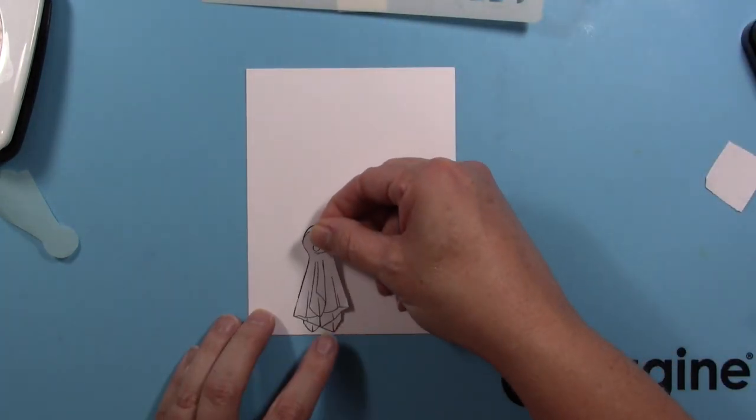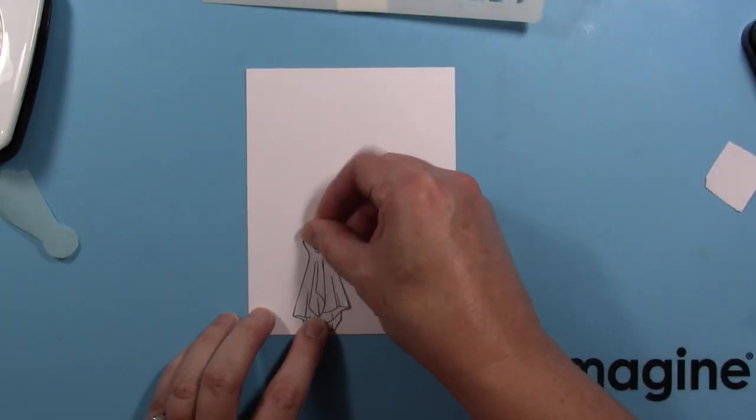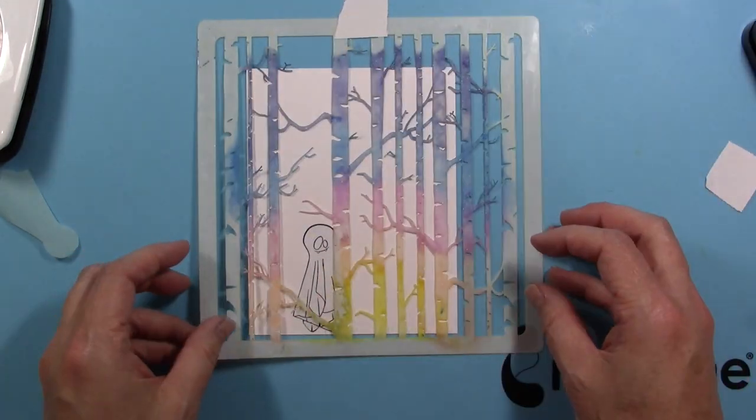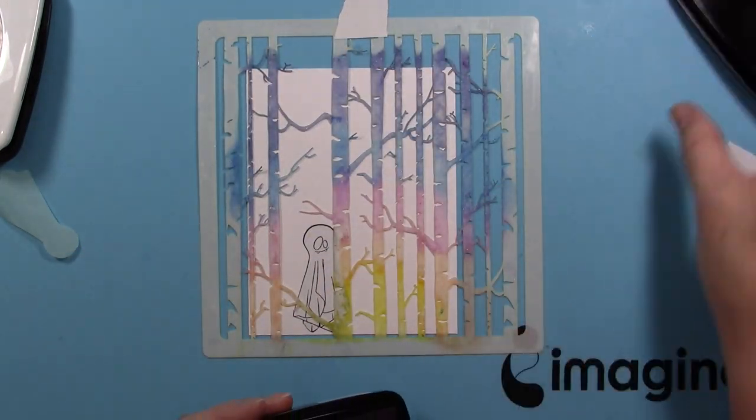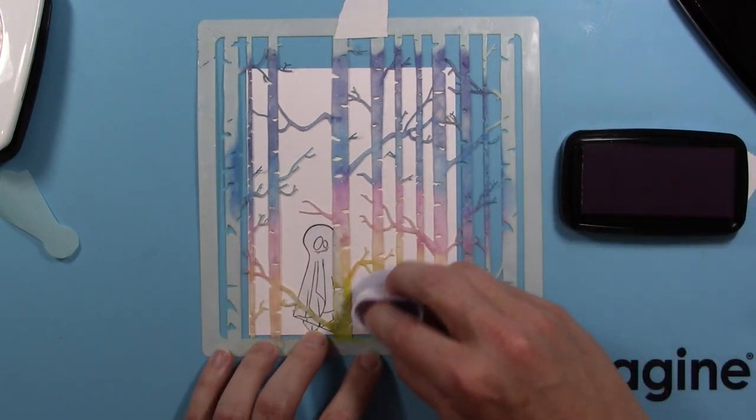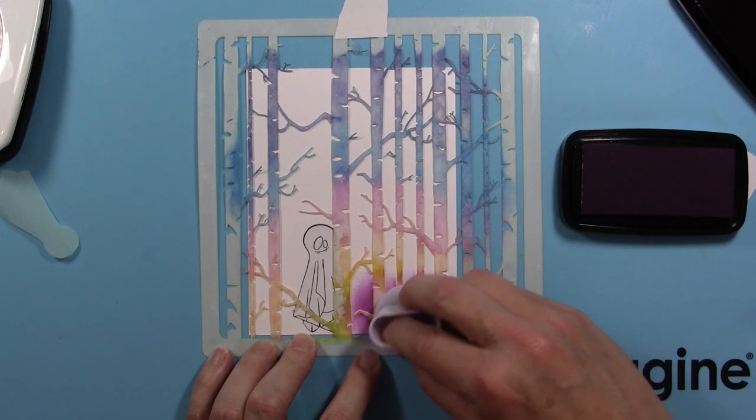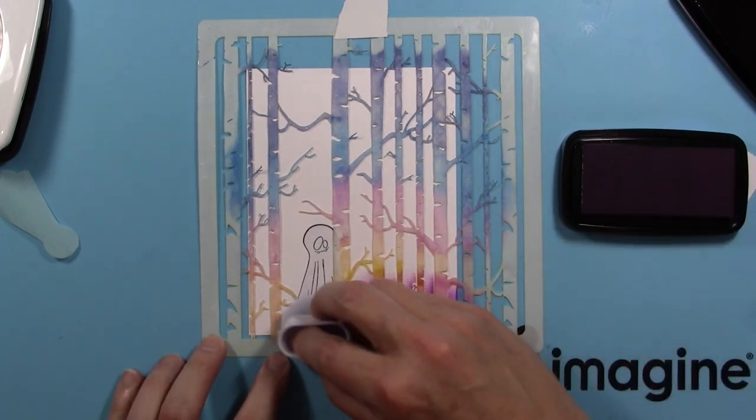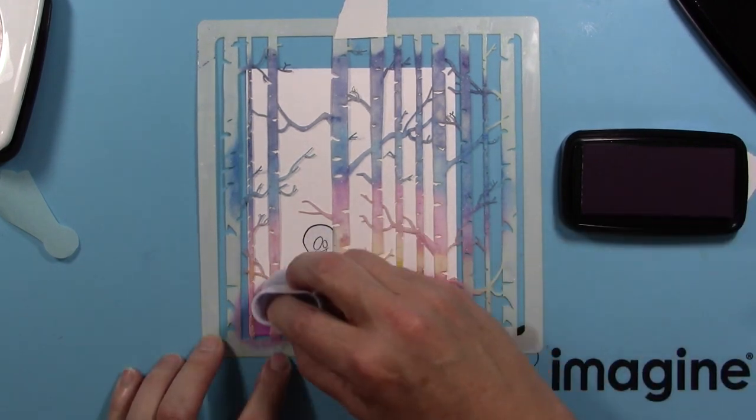I stamped over this stencil with my Memento Tuxedo Black and then I masked the ghost off so that I can actually ink the background. I did stamp onto my Bristol smooth cardstock and this is a four and a quarter by five and a half sheet.